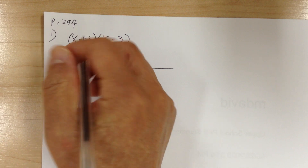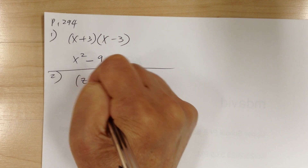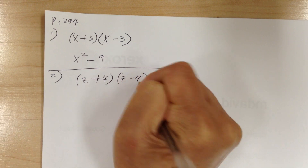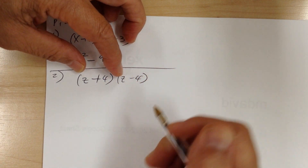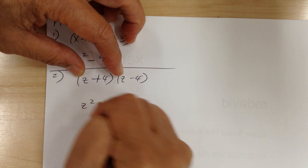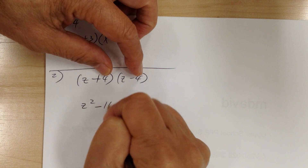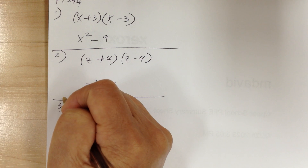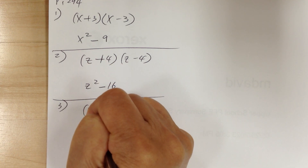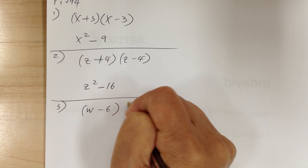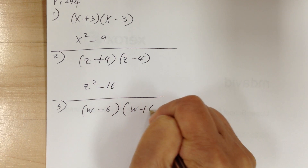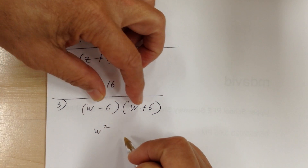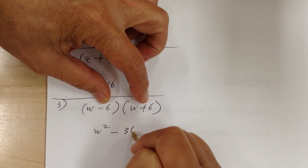Number 2: you've got z plus 4 times z minus 4. So you can multiply conjugates, so it would be z squared minus 16. Number 3: you have w minus 6 times w plus 6. So you can multiply, so it would be w squared minus 36.